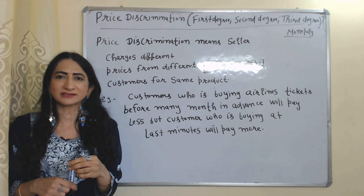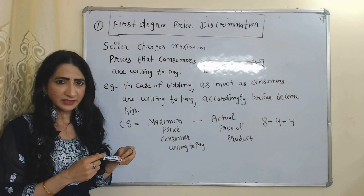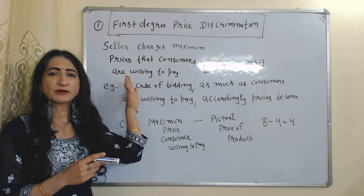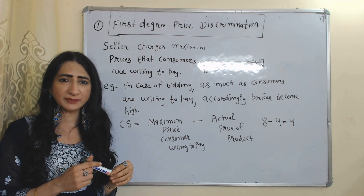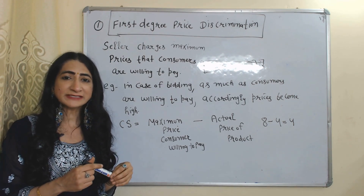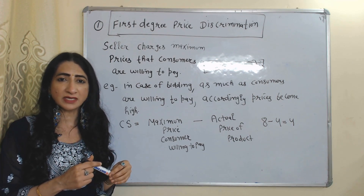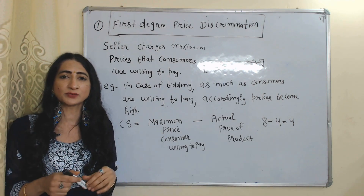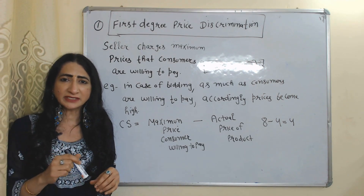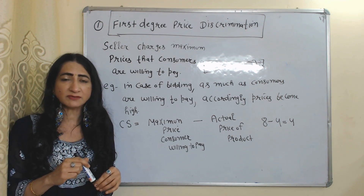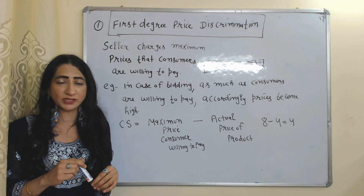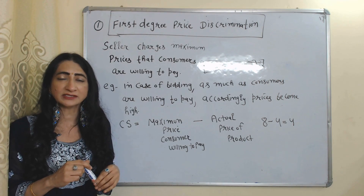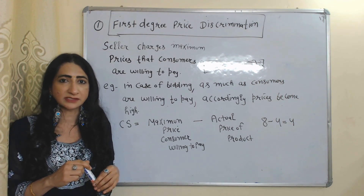There are mainly three degrees of price discrimination: first, second, and third. First degree price discrimination means when the seller charges the maximum price that the consumer is willing to pay. That's why in case of first degree price discrimination, consumer surplus is zero.